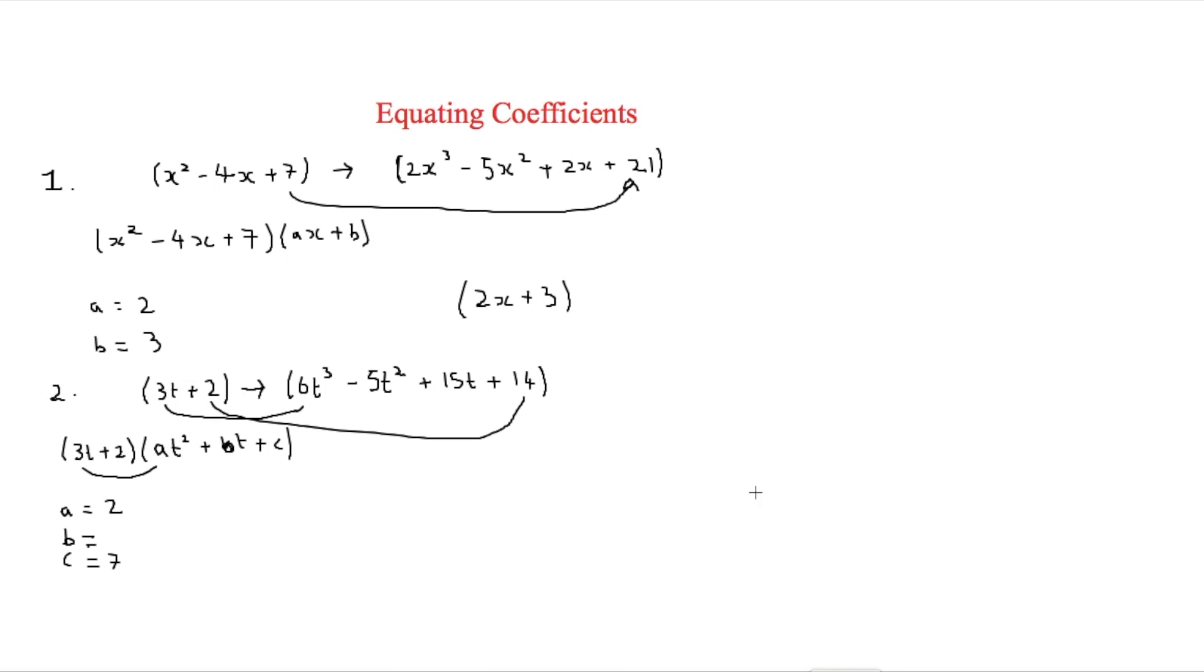Now the b, in order to do this we're going to have to equate the coefficients again. But we're going to be looking at this minus 5t squared. And we're going to say here that minus 5t squared is equal.